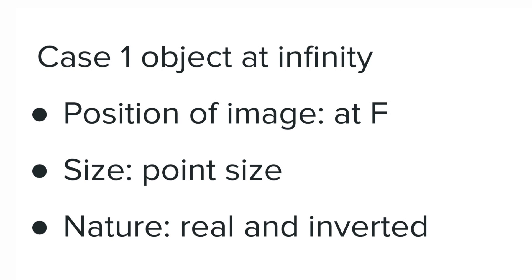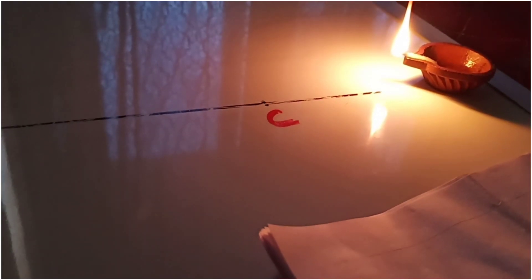After adjusting the paper, I can see a really tiny spot on the paper. When I move it forward it disappears, and when I bring it back I can see that tiny spot. So we get the image almost at the focus. The characteristics: position is at the focus, size is very small, and the nature is real and inverted — real because we obtained it on a screen.